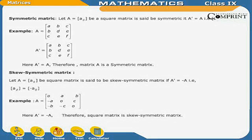Symmetric matrix: Let A equals the matrix Aij. A square matrix is said to be symmetric if the transpose of A is equal to A. That is, Aij is equal to Aji. For example, let A equal to the matrix [a, b, c; b, d, e; c, e, f]. The transpose of A will equal the same matrix [a, b, c; b, d, e; c, e, f]. Here, the transpose of A equals A, therefore matrix A is a symmetric matrix.